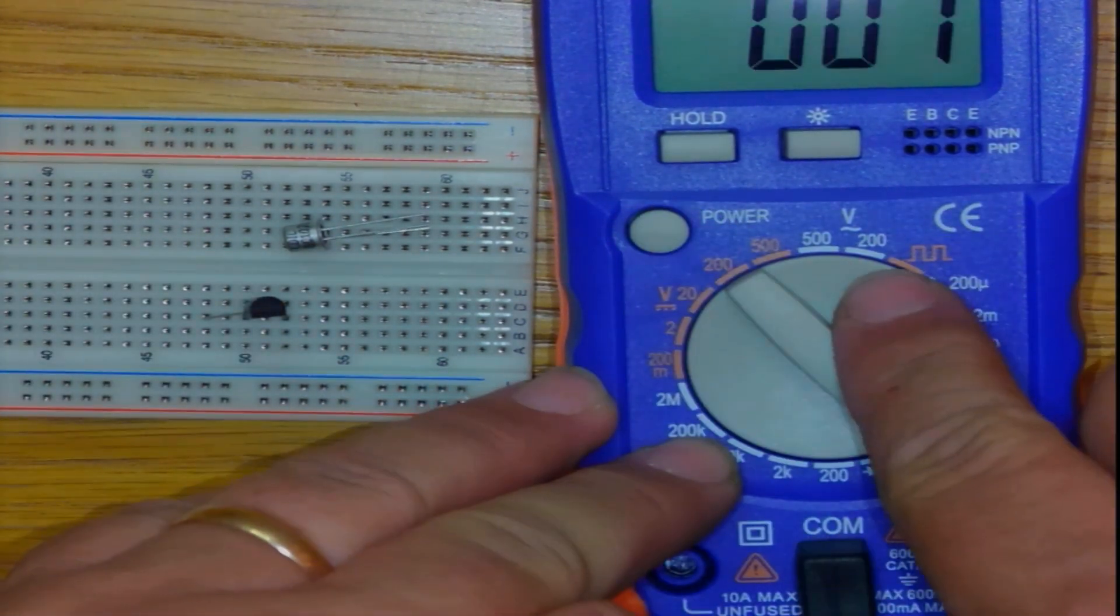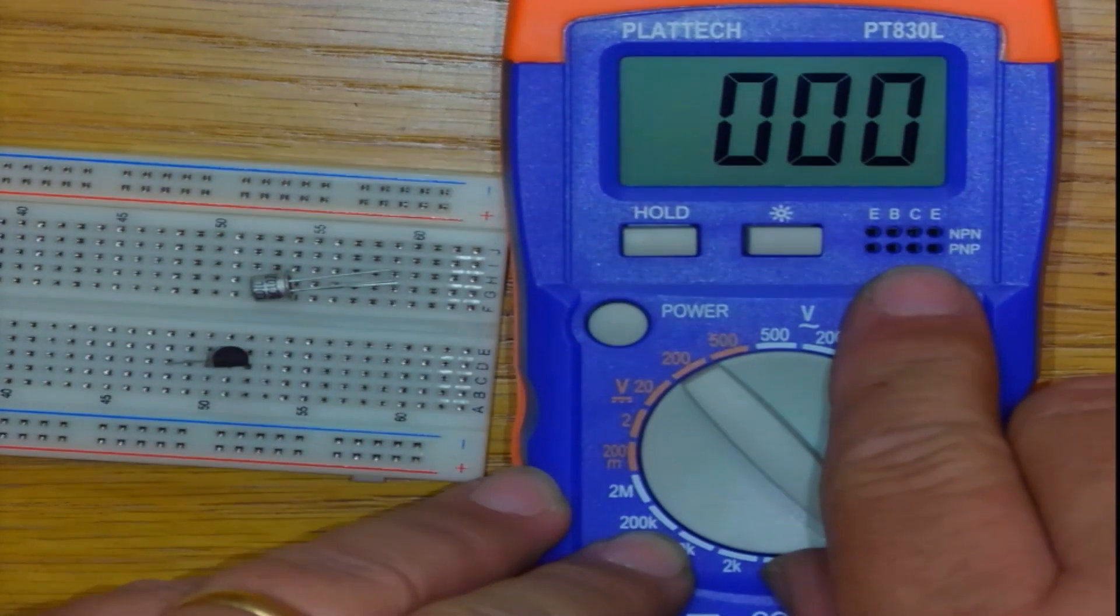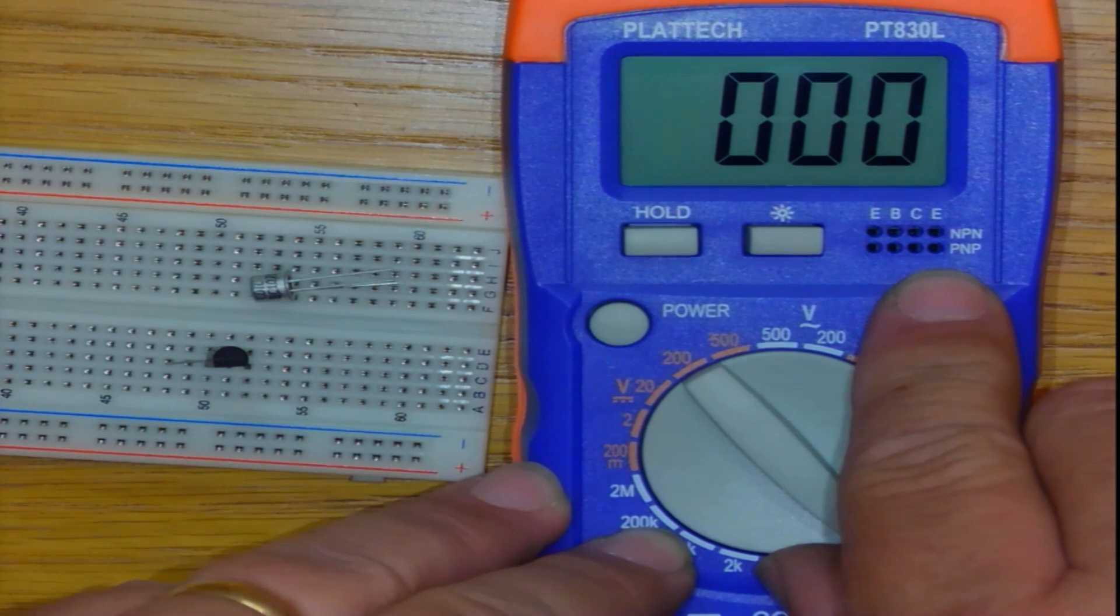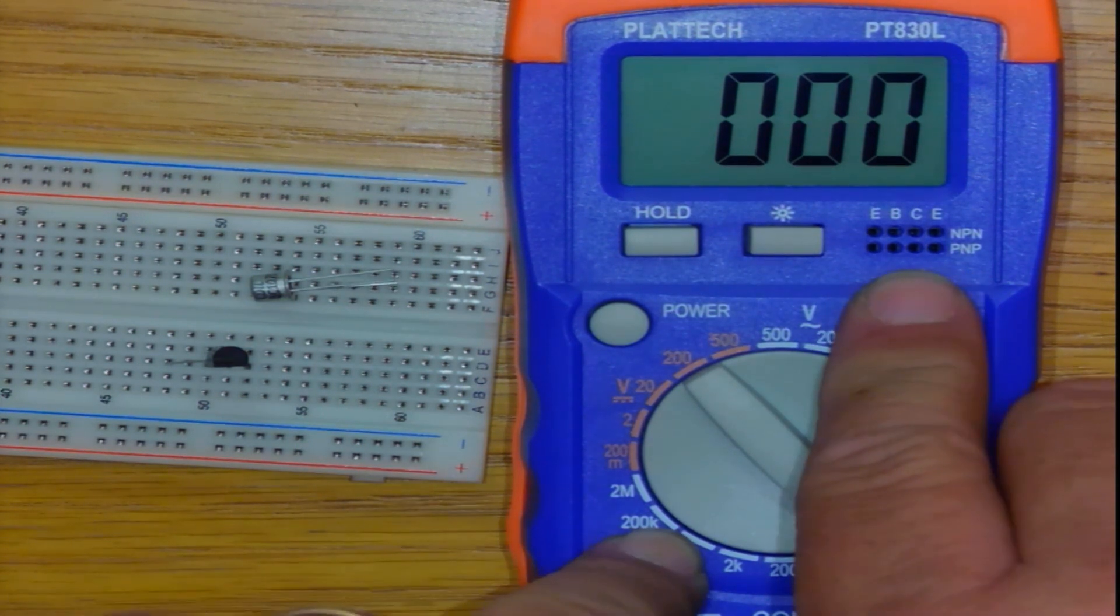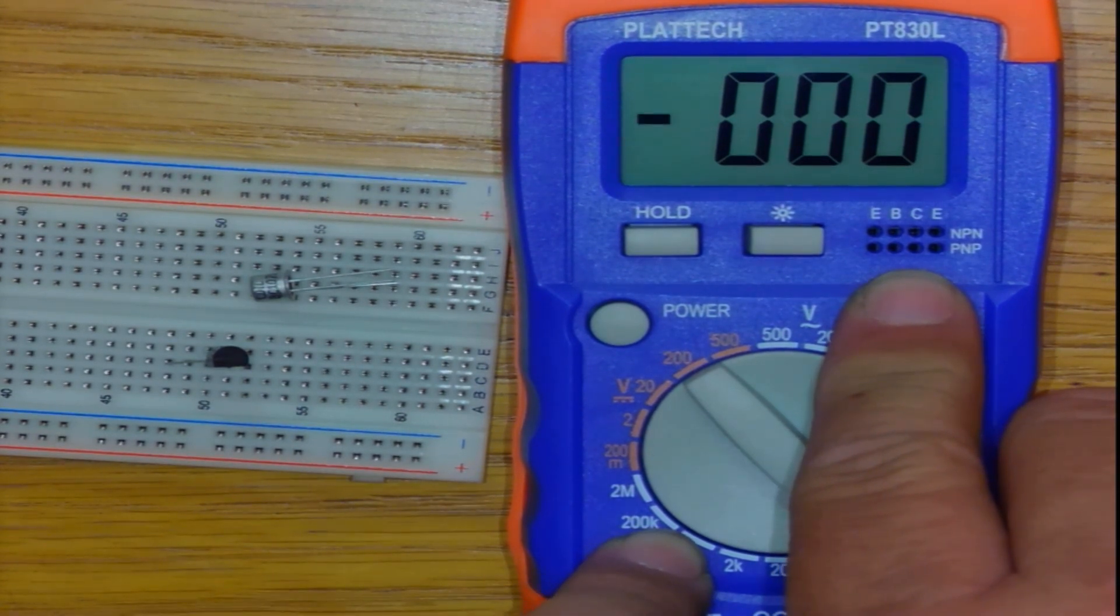But if I now use a multimeter, a multimeter has got, or some of the models has got a little arrangement here, which allows for NPN and PNP transistors to be identified. And the whole idea of that is firstly, a very quick way and convenient way of identifying where is the emitter, the base and the collector.